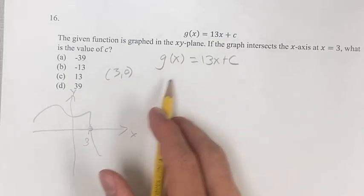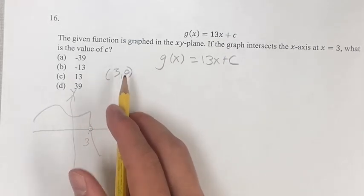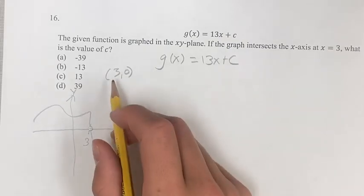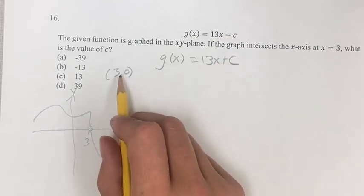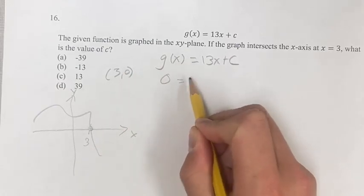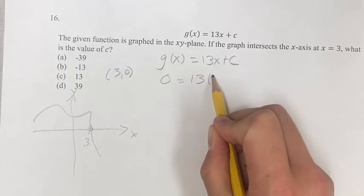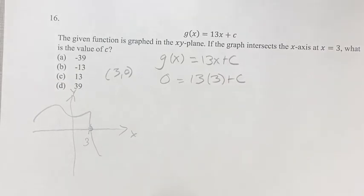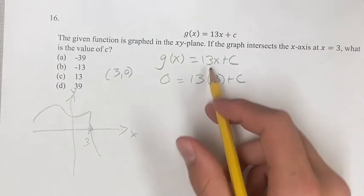This equation is true when x is equal to 3 and y is equal to 0, therefore we can plug them in. So plugging in 3 for x and 0 for y, or g(x), gives us 0 equals 13 times 3 plus c. Now we have an equation that we can solve for c.